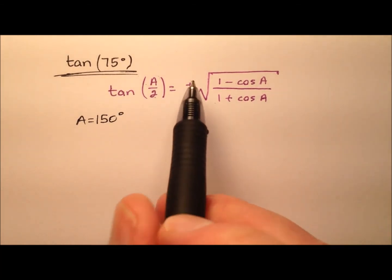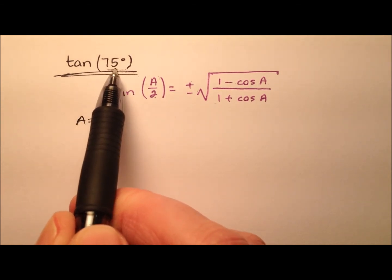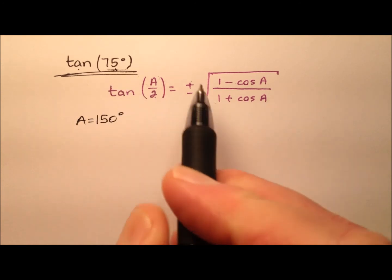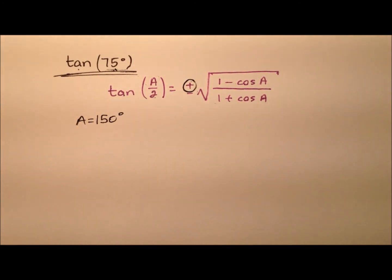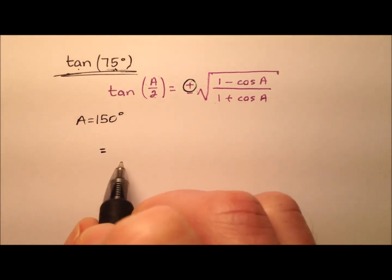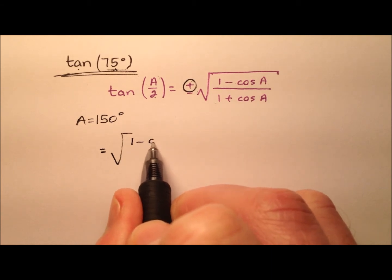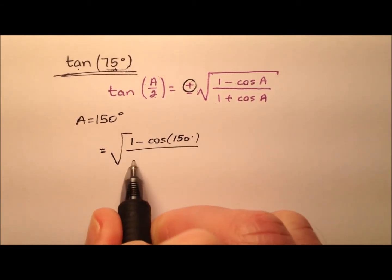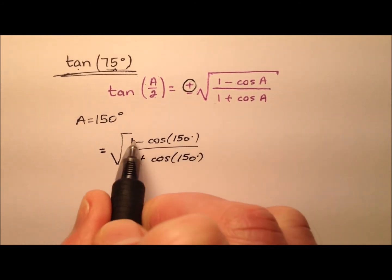As for the plus or minus: 75 degrees resides in the first quadrant, and tangent is positive in the first quadrant, so we'll take the positive. So I have the square root of 1 minus the cosine of 150 degrees over 1 plus the cosine of 150 degrees.